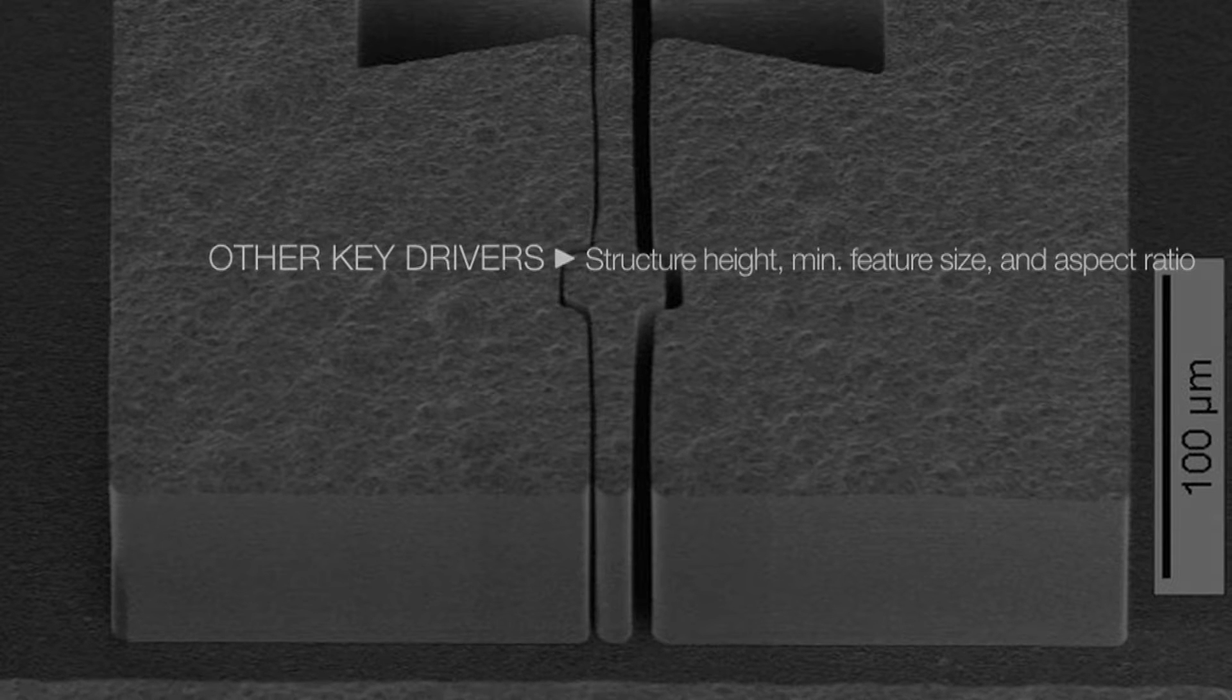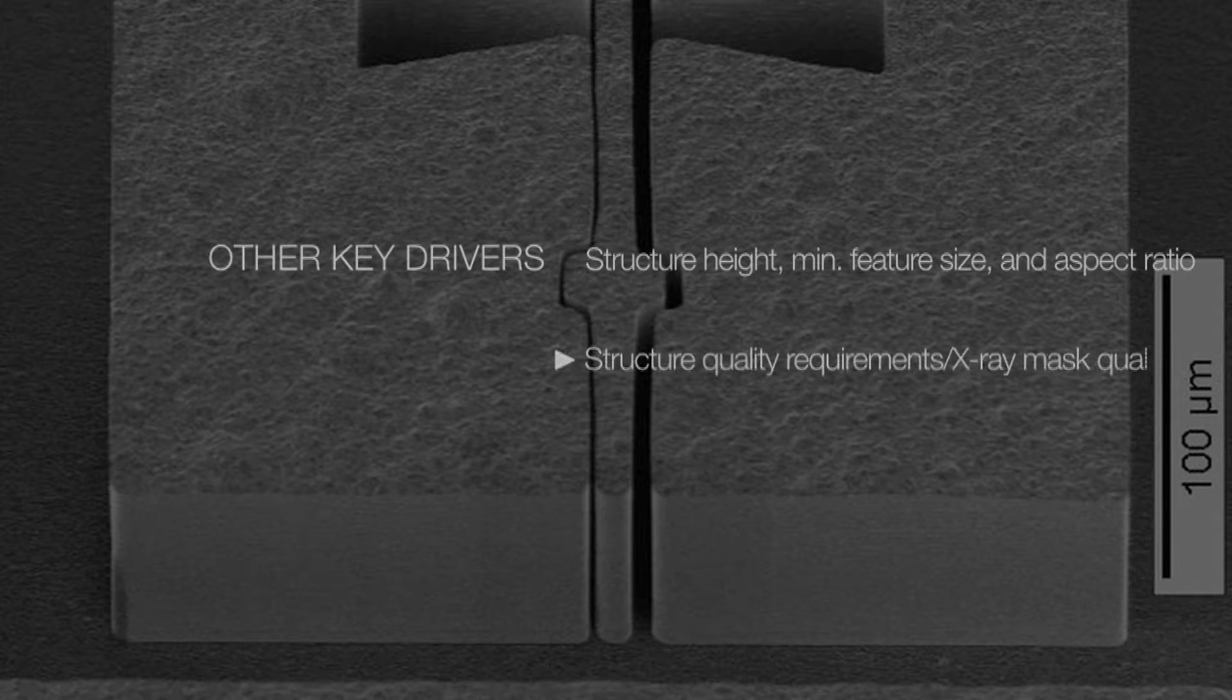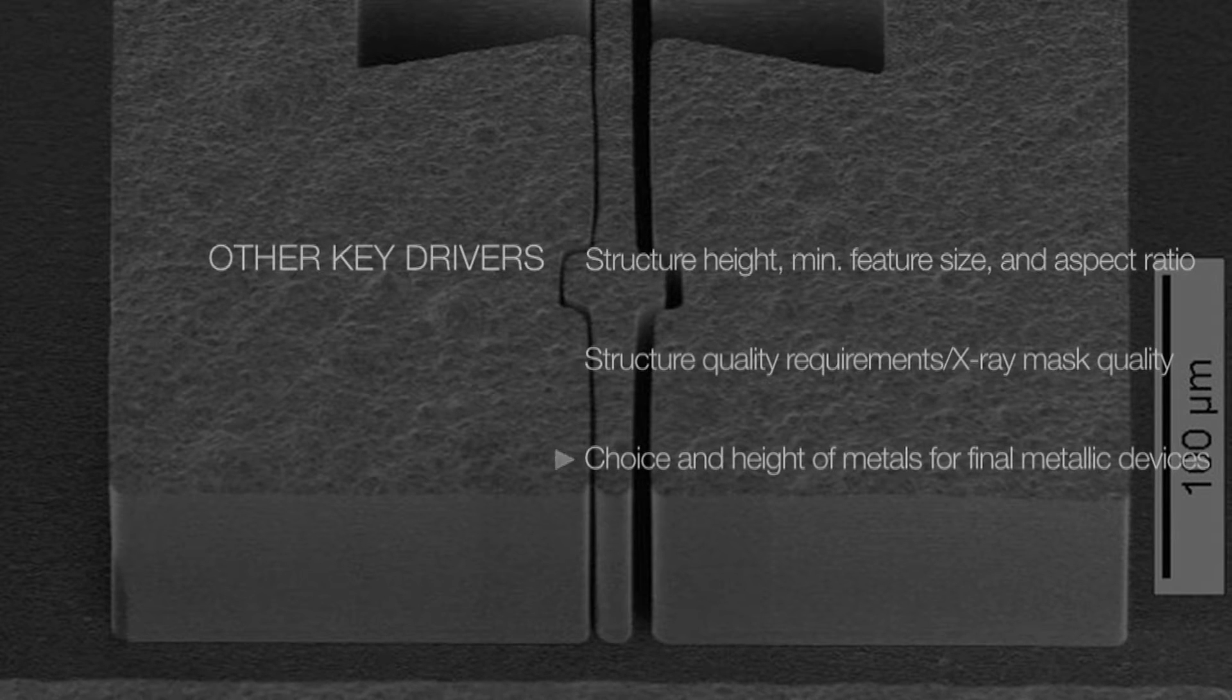Polymer structure height, minimum feature size, and aspect ratio requirements. Structure quality requirements, X-ray mask quality. Choice and height of metals for final metallic devices, if required.